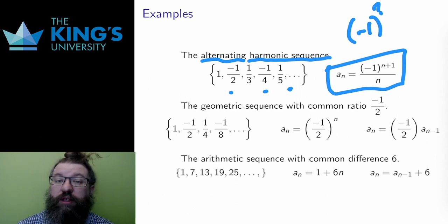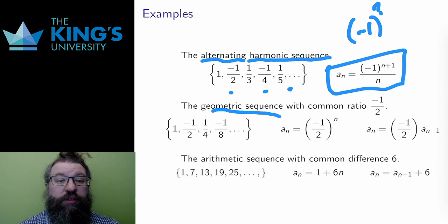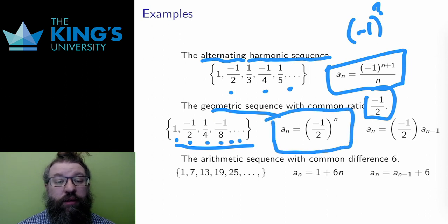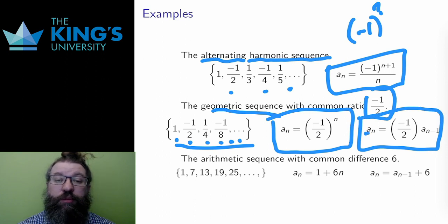There is a whole family of geometric sequences. These are sequences with a common ratio. Each term divided by the previous term is a fixed number. Here is an example with common ratio of negative 1 half. It starts at 1, then I multiply by negative 1 half in each step. The direct form is negative 1 half to the power n, and the recursive form starts with 1, and then has each element equal to negative 1 half times the previous. That's what common ratio means.